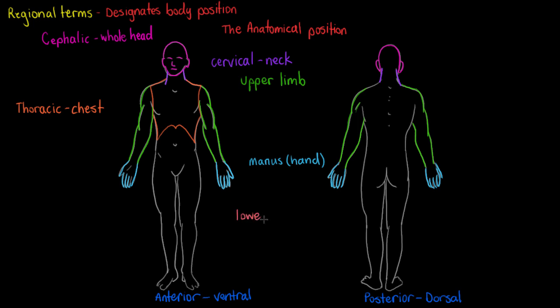The next region we'll look at is our lower limbs. Our lower limbs are going to extend from the bottom of your pelvis all the way to your ankle. Then once we get to the ankle, we're going to separate the foot into a different category, just like we did with the upper limbs and the hand. So drawing in the legs here from the pelvis all the way to the ankle, including the posterior side of the body as well. All of the terms for the lower limb will include your anterior and posterior view.